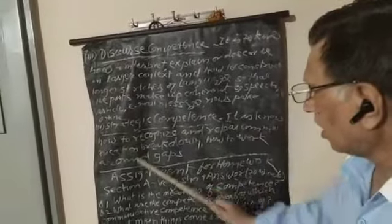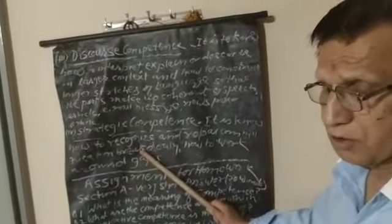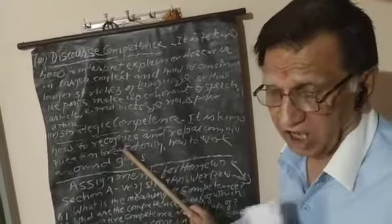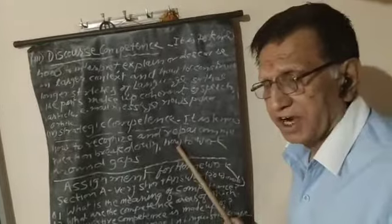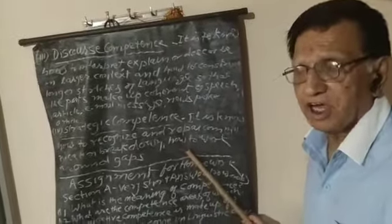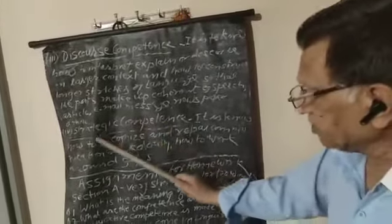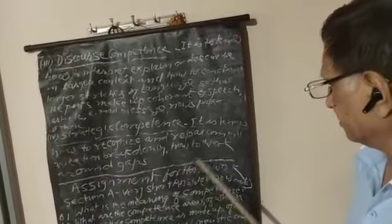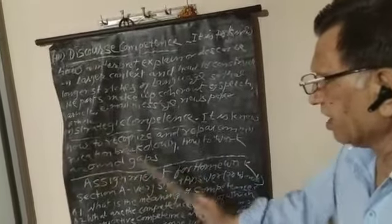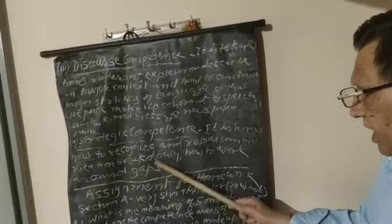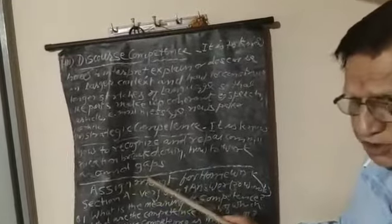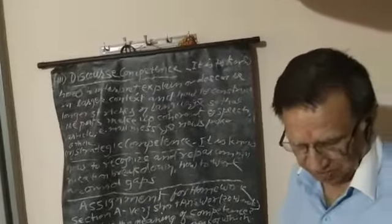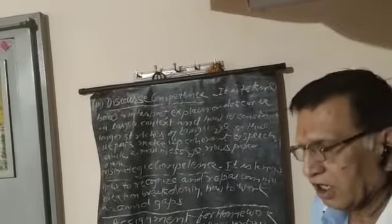It is to know how to recognize, how to know what mistake I have done and to repair it. Repair it so the mistake could not seem to the other person. This ability is called strategic competence. And reduce the breakdown. How to work around gaps.